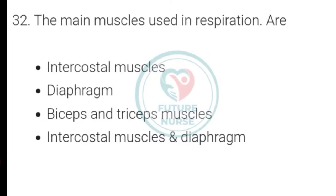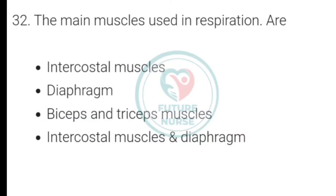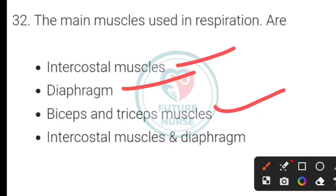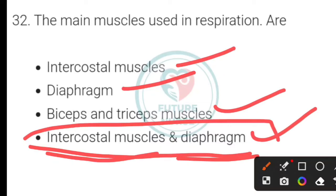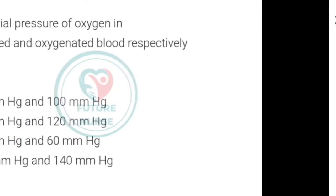The main muscles used in respiration are which of the following? Options: intercostal muscles, diaphragm, biceps, and triceps. The correct answer is intercostal muscles and the diaphragm — these are the two main muscles used in the respiration process.